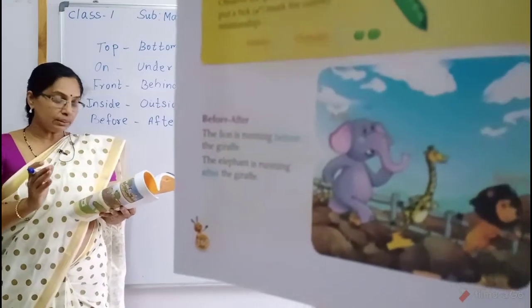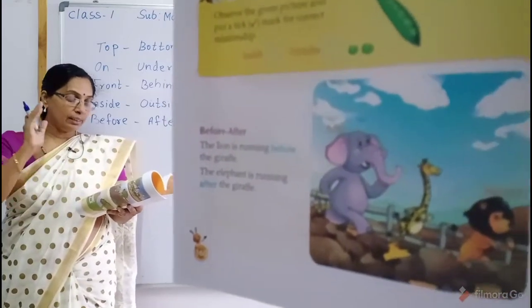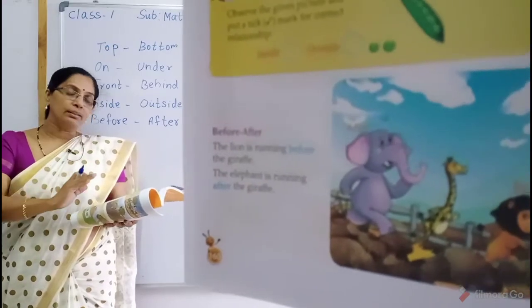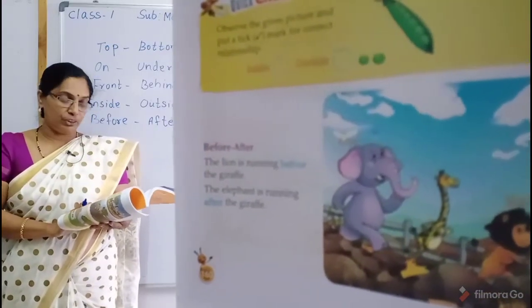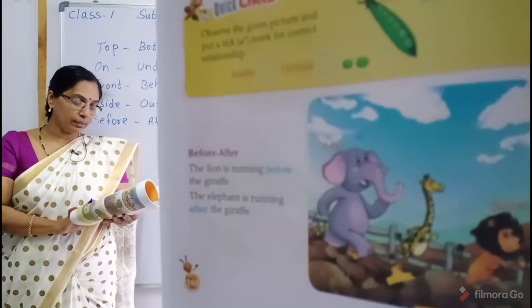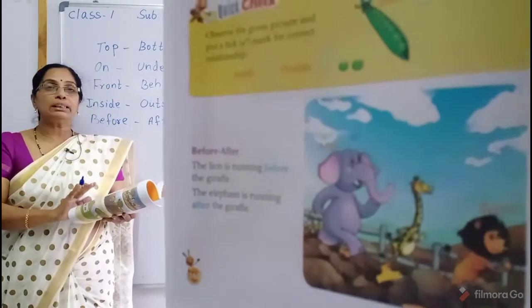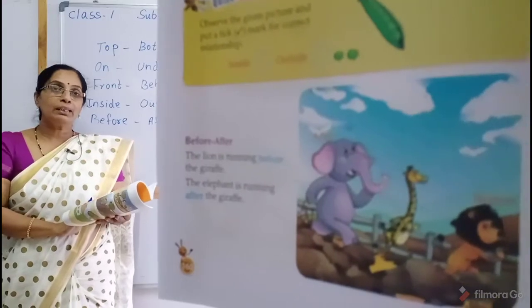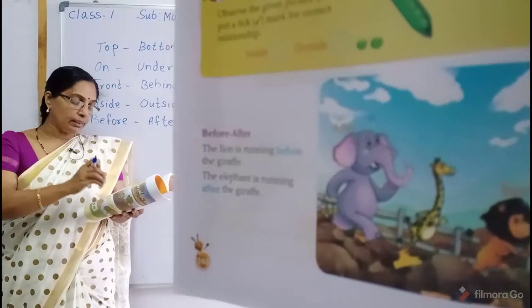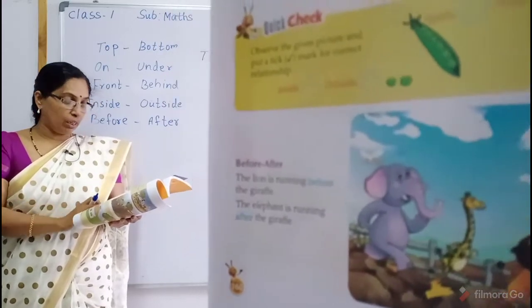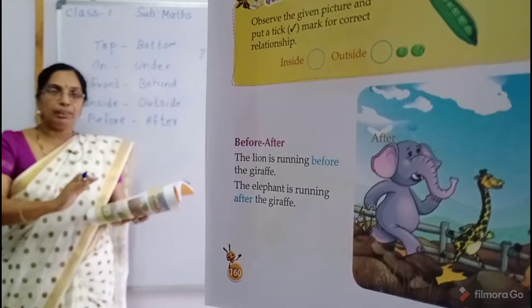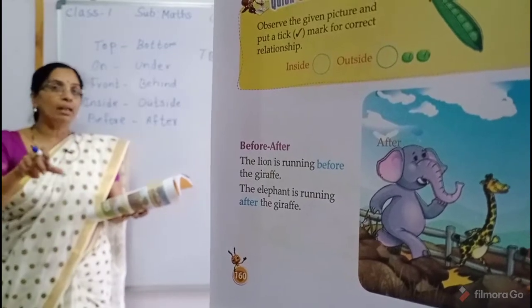The first is the lion, in the center, between a giraffe and the back, an elephant. Three animals are there. According to this picture, we should recognize the position. We should say the animal giraffe. The giraffe is in the middle, between. In front, who is that? Before the giraffe — lion.